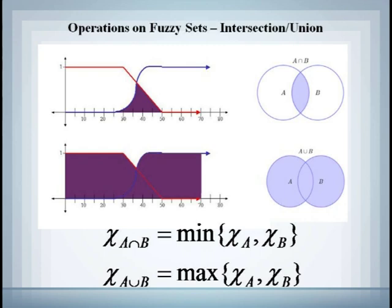This implies that one way to interpret union and intersection for fuzzy sets is that the membership function for the intersection of two fuzzy sets is just the minimum of the membership in either of the two sets we are intersecting. The membership function for the union of two fuzzy sets is the maximum of the membership in either of the two sets.